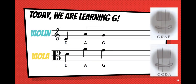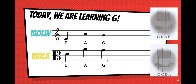Today, we're going to learn G. If I'm playing the violin, to read a G it sits on the second line, and my G string is this one here. If I'm playing the viola reading the alto clef, the G sits on the top line, or the fifth line, and my G string is this one here, the second one from the left.